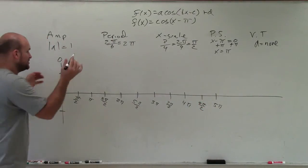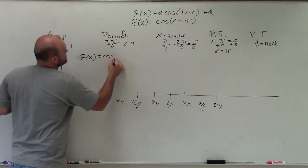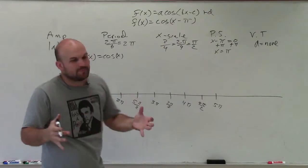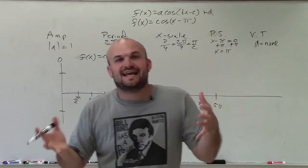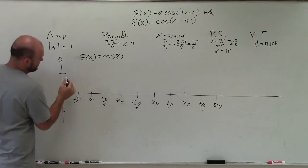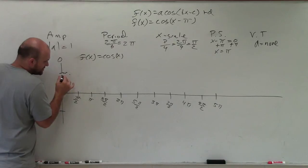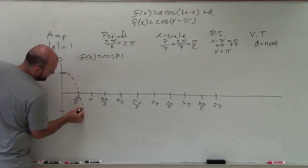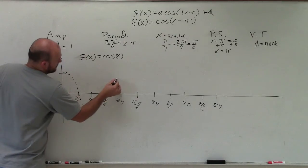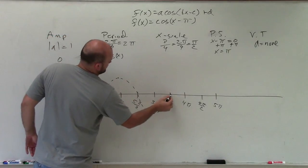So if I was going to graph the parent function, what I'm graphing right now is the parent function, f(x) = cos(x). You have to know what the parent function is to understand what this phase shift is doing. So if I graph the parent function, we always start at the vertex. This is starting at 0, with no transformations. I'm going to go up, down, up. That's one period.